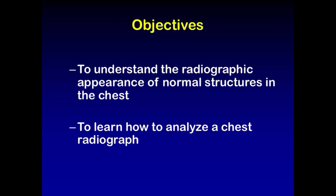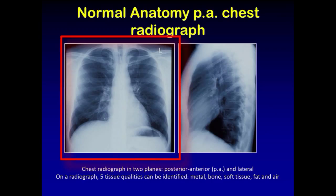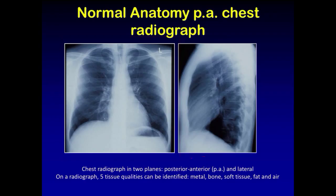Our objectives for today are to understand the radiographic appearance of normal structures of the chest and to learn how to analyze a chest radiograph. Typically, a chest radiograph is taken in two planes, featuring a three-dimensional object on a two-dimensional picture. One plane will be taken in the direction of the x-ray, posterior to anterior. The second plane typically is lateral.